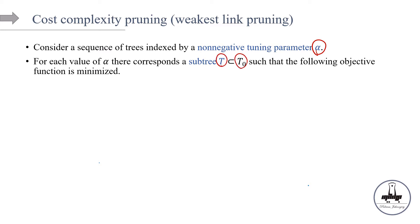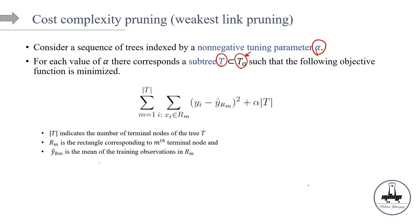We call T a subset of the bushiest tree — the very large tree T-null — such that the following objective function is minimized. The first part of the minimization is exactly what we've seen before: we are minimizing the RSS over all the regions. However, we are adding a penalty term. This is much like the regularization concepts we've seen before. We are adding a penalty term: if the tree is bushier, T is going to be larger, and we add that to the cost function, penalized by parameter alpha.